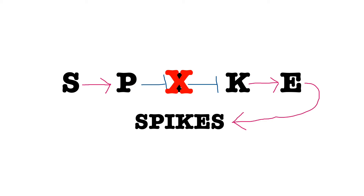The next mutation tested was surrounding I. The pathway would begin as normal, with S promoting P, but with the mutation of I, P is unable to perform its normal inhibition, and K will also not be inhibited. So it will promote E and lead to the development of spikes in the dragons.